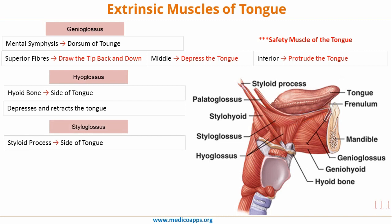Next we have the styloglossus. It starts from the styloid process to the side of the tongue. Because it is up and behind the tongue, its action would be to elevate and retract the tongue. Both hyoglossus and styloglossus are behind the tongue so both retract it, but styloglossus is superiorly situated so it elevates the tongue, whereas hyoglossus is inferiorly situated so it depresses the tongue.